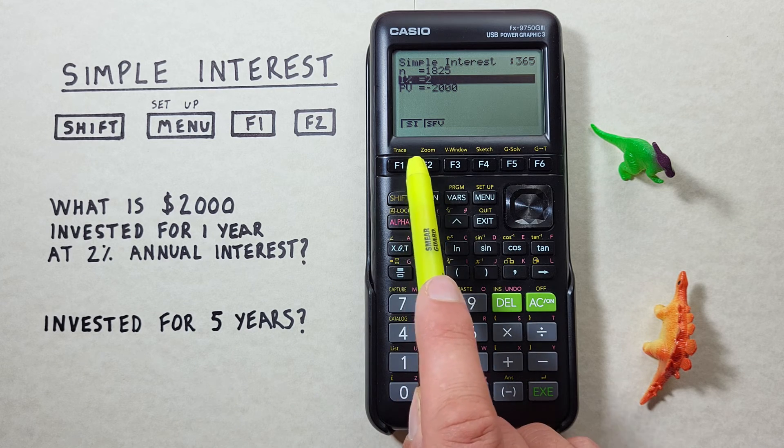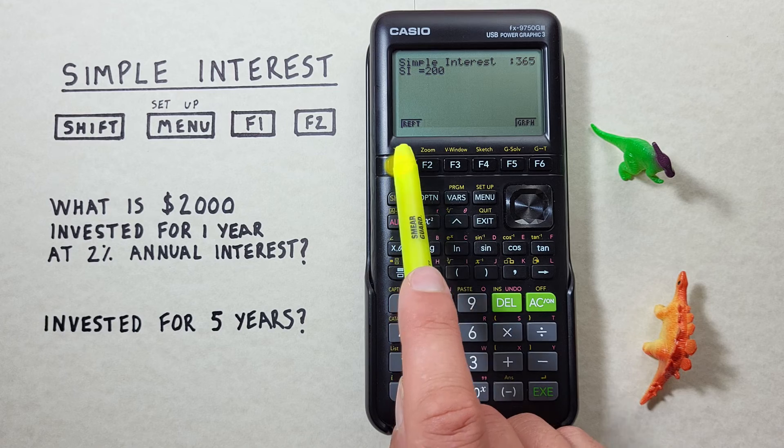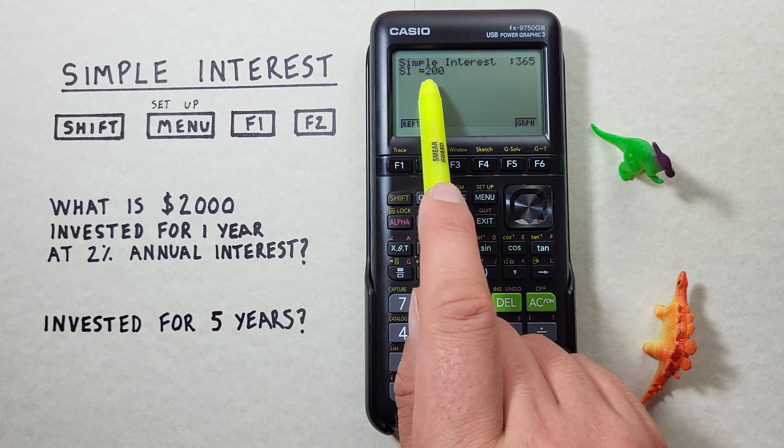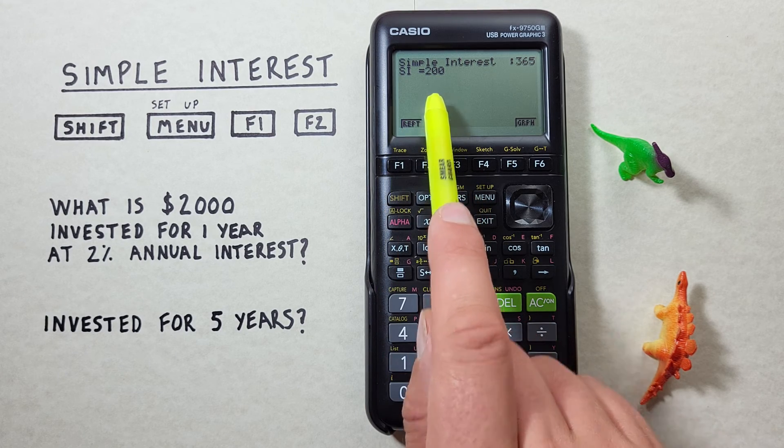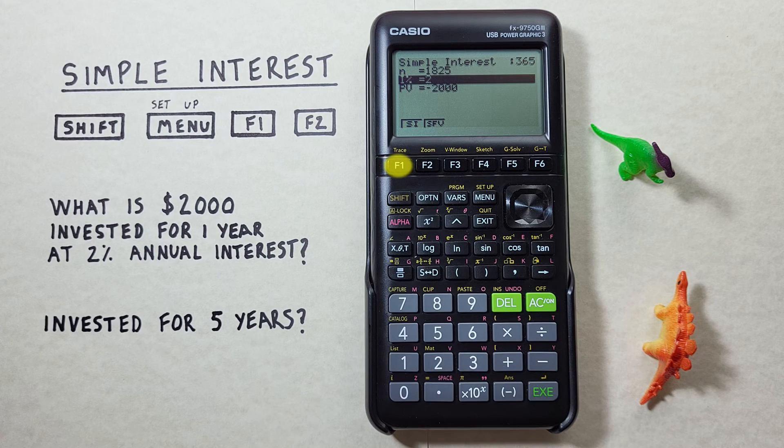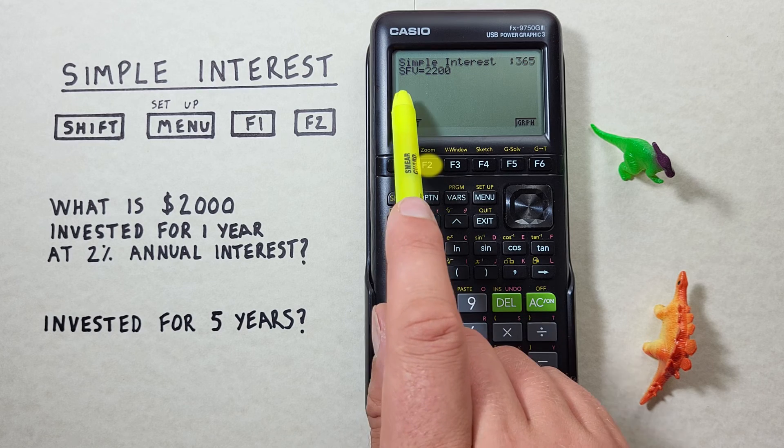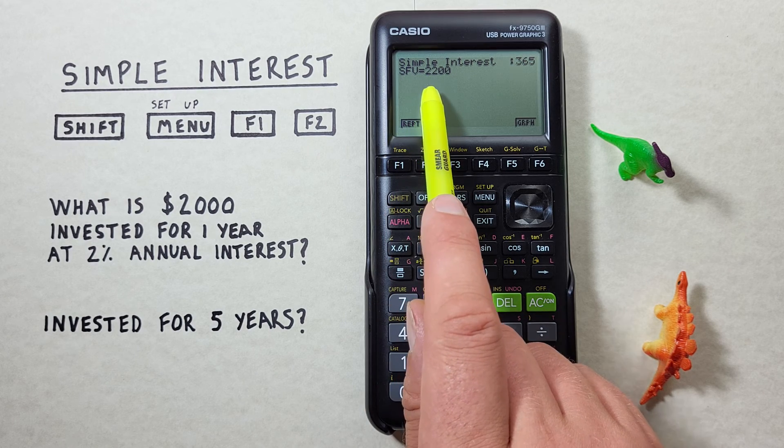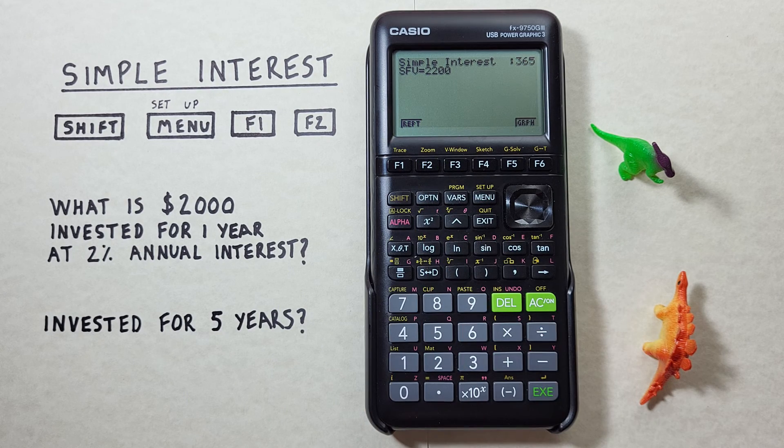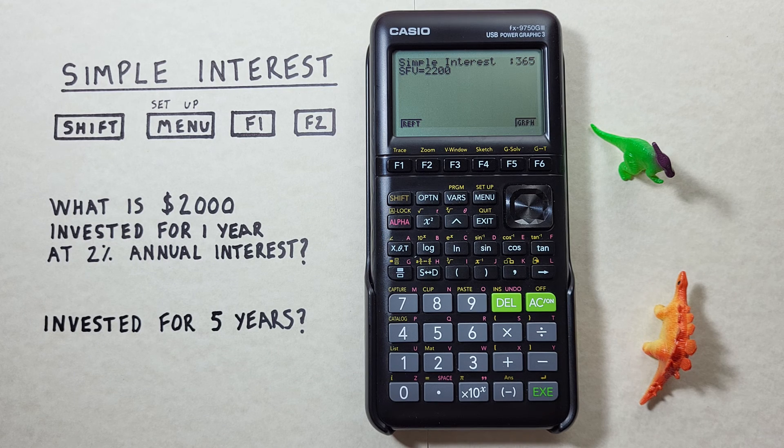And now if we check our simple interest with F1 we see we get a simple interest of $200. And if we check our simple final value after 5 years we end up with a final value of $2,200. Alright, I hope this helps and good luck on those tests out there everybody!